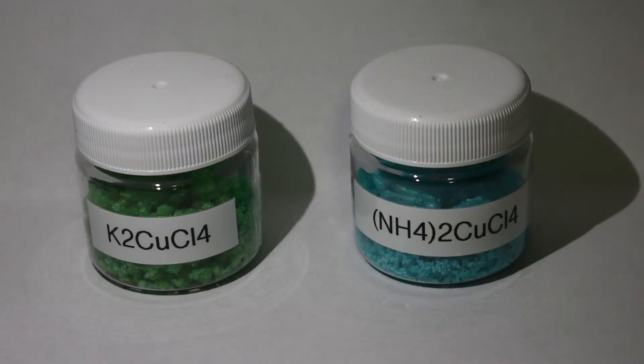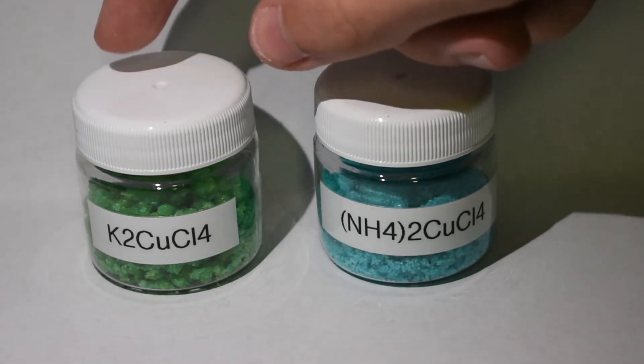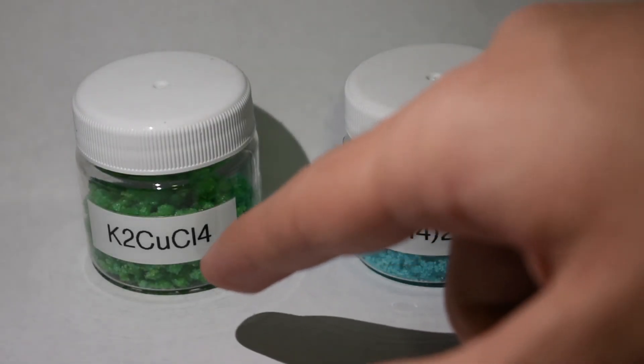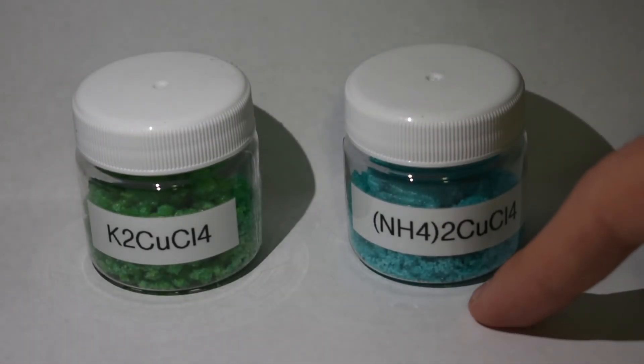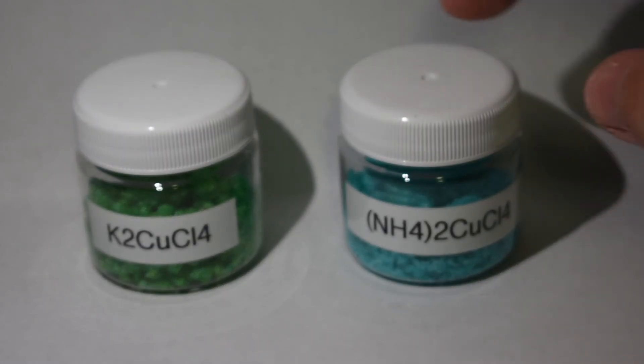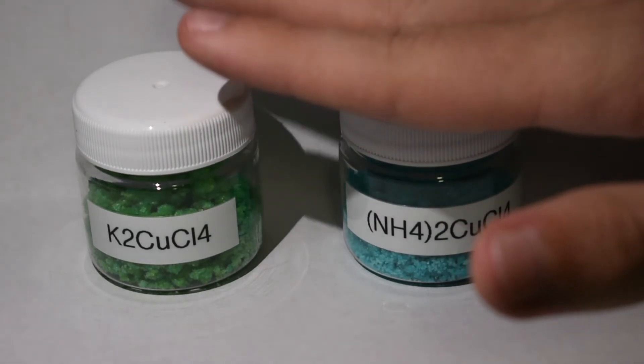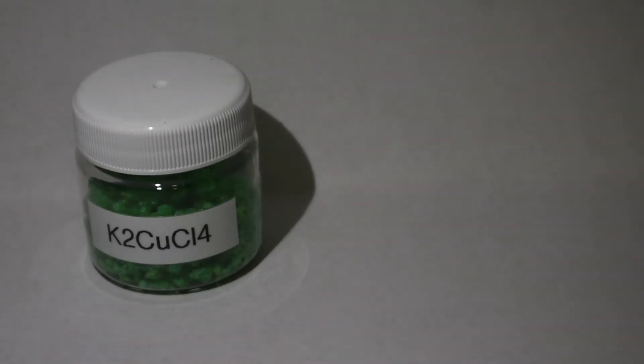Here are our final products. We have our ammonium tetrachlorocuprate and our potassium tetrachlorocuprate. And after massing them, we got a 96.1% yield with the potassium and a 97.8% yield with the ammonium salt. And that's probably due to transfer losses and what not. But overall this is a really good yield for what it is, it's basically just combining two salts and evaporating it. And the color is very nice.